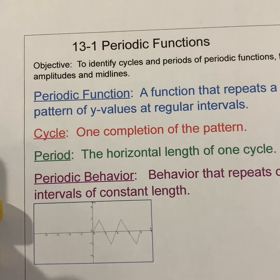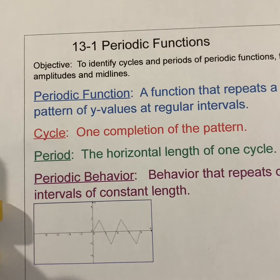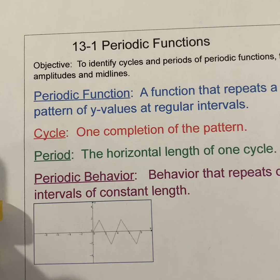I'm pretty sure every single one of you has had some sort of dealing with a periodic function, most likely in one of your science classes. The objective is to identify cycles and periods of periodic functions and find amplitudes and midlines. A periodic function is a function that repeats a pattern of y-values at regular intervals. A cycle is one completion of the pattern. The period is the horizontal length of one cycle. Periodic behavior is behavior that repeats over intervals of a constant length.